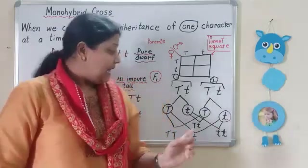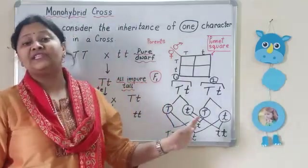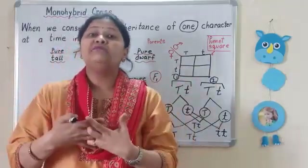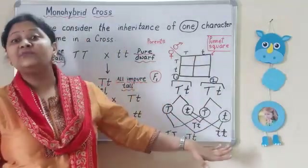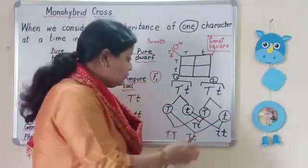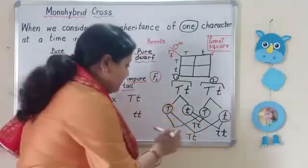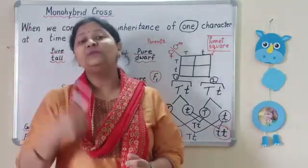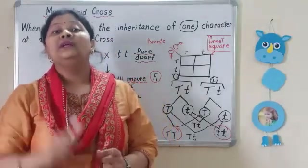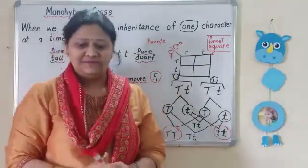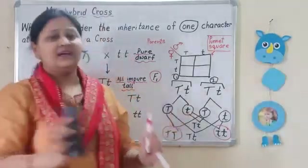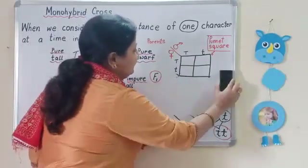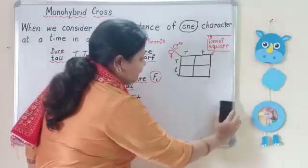One more important point: when we cross the F1 generation progeny — the hybrid impure tall — among themselves, we get back both parental types in the result: pure tall and pure dwarf. To make this calculation easier, one scientist gave the Punnett square. In the Punnett square, we write the male gametes horizontally and the female gametes vertically. So we have capital T and small t along the top, and capital T and small t on the side.